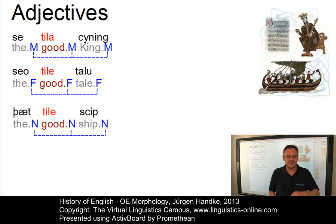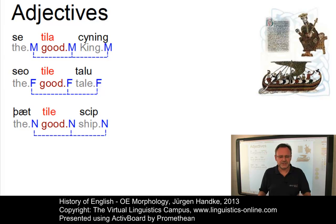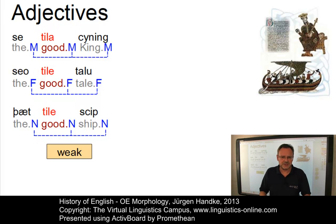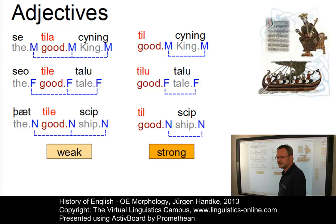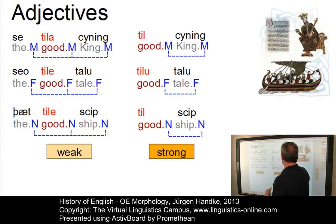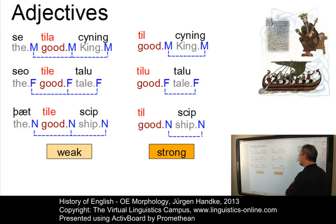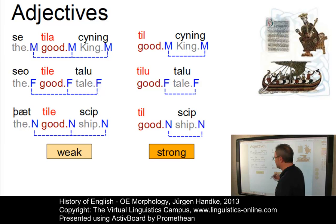Furthermore, adjectives can also take comparative and superlative endings. And — most remarkably in Old English — adjectives preserve the Germanic principle of two separate declensions: the so-called weak declension, where the adjective occurs in the context of a determiner, and the so-called strong declension, where adjectives occur without determiners and special forms have to be used. So 'gōdne cyning' is weak, whereas 'tīl cyning' — good king — 'tīlu talu' — good tale — and 'tīl scip' — good ship — represent the strong adjectival declension.